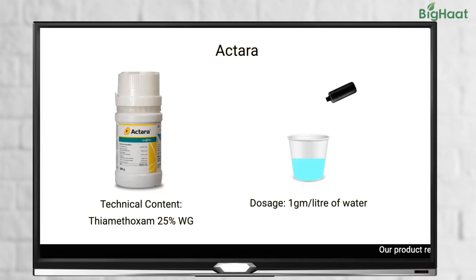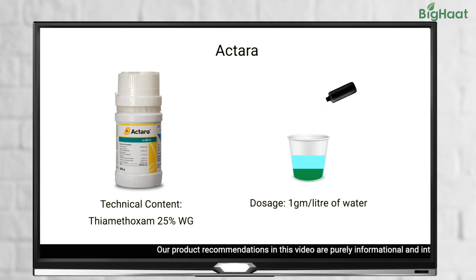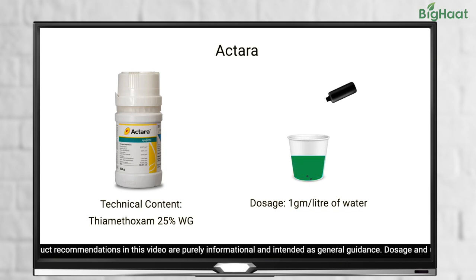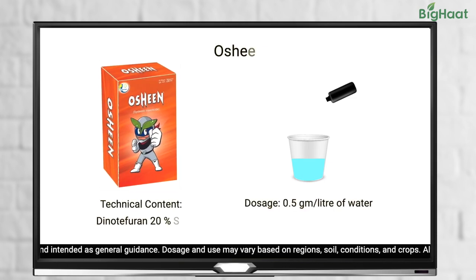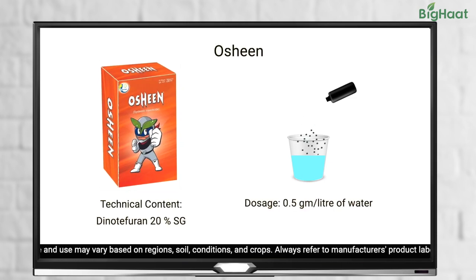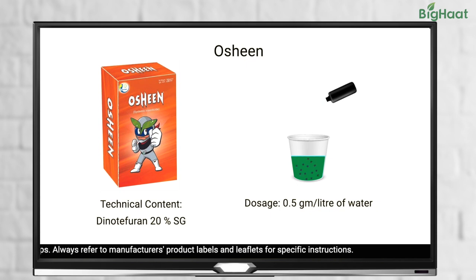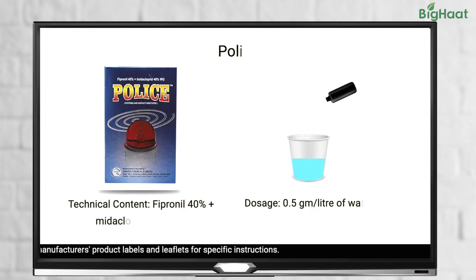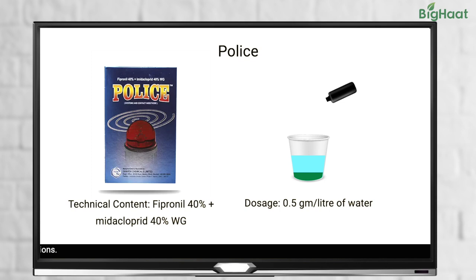To get rid of thrips you can use a foliar spray of 1 gram of Actara mixed in 1 litre of water. You can also use 0.5 grams of Oisin mixed in 1 litre of water, or Polis insecticide 0.5 grams mixed in 1 litre of water.